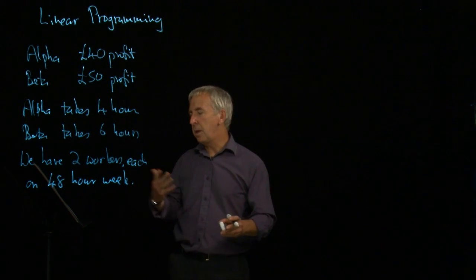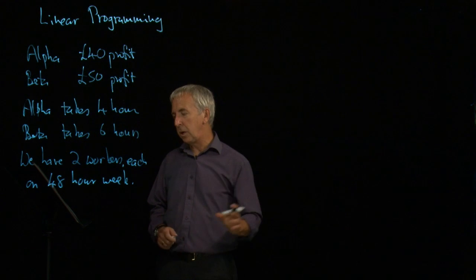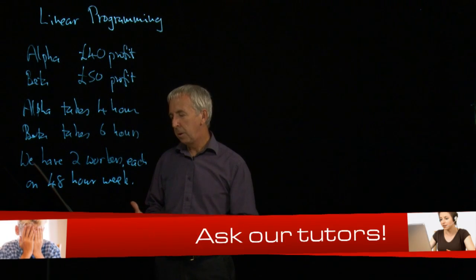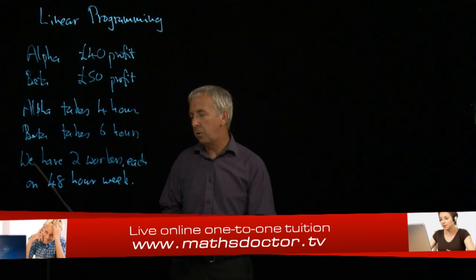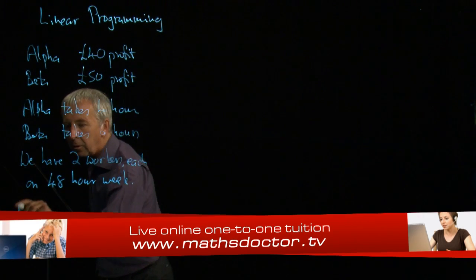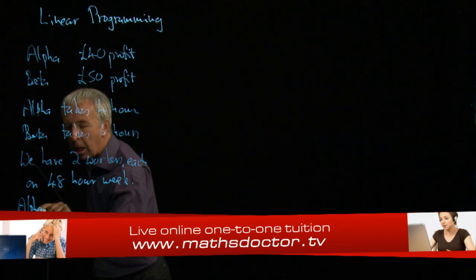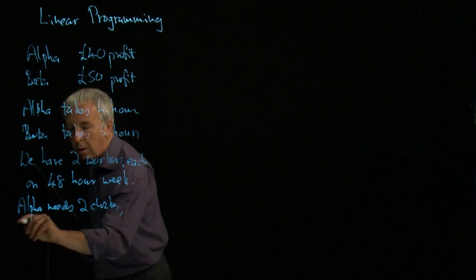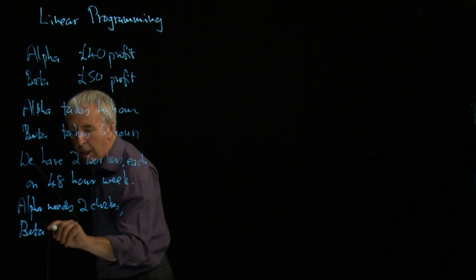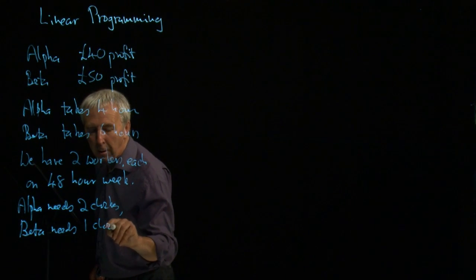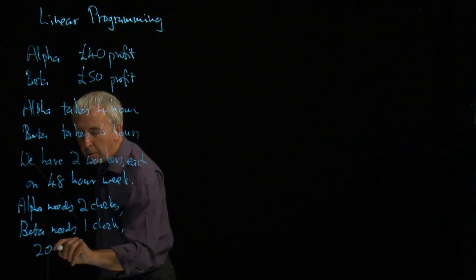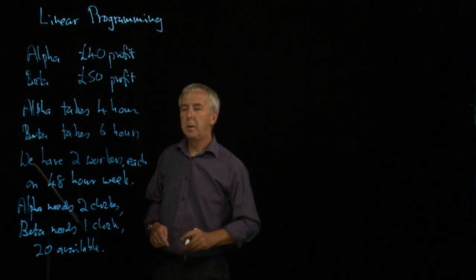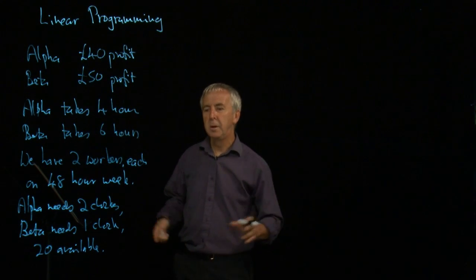Another difference is that the alpha microwave has got two built-in clocks and the beta only has one. And we've only got, we can only get 20 of these clocks each week. So the alpha needs two clocks. The beta needs one clock and there are 20 available. So alphas use up more clocks than the betas.